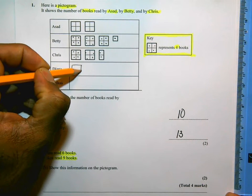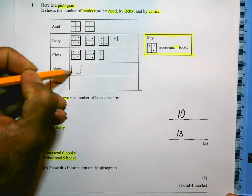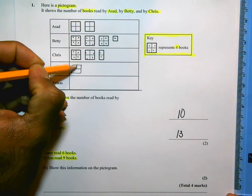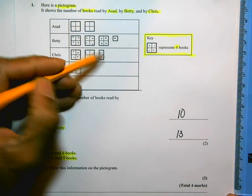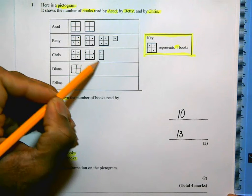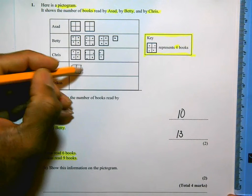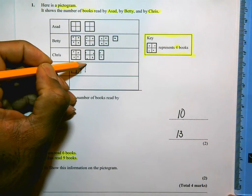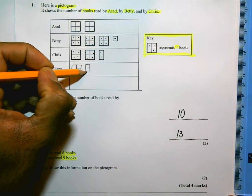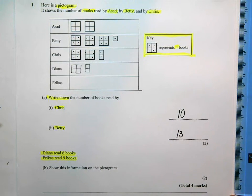So Diana read six books. So I definitely need to draw one of those because that's going to represent four books. And if you remember from Chris's, that there represents two books. So four and two make six. So I'm going to do one of those as well. That's six books altogether for Diana.